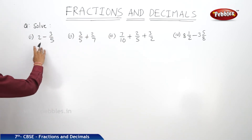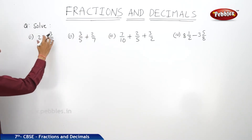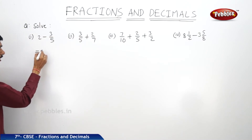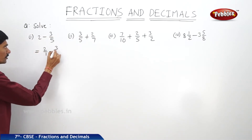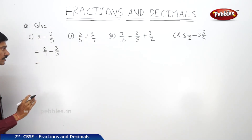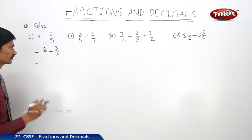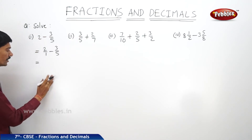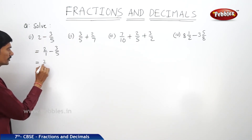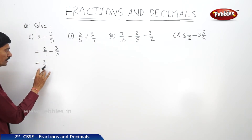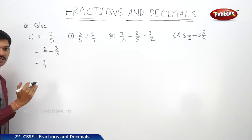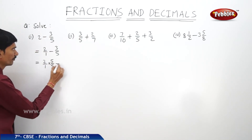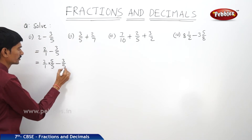In the first question: 2 minus 3/5. Here 2 is a whole number and 3/5 is a fraction. We have to subtract a fraction from a whole number. This whole number 2 can be written as 2/1 minus 3/5. These are not like fractions, so first we make them like fractions. The LCM of denominators 1 and 5 is 5. To make the denominators equal, we multiply: 2/1 becomes 10/5, giving us 10/5 minus 3/5.